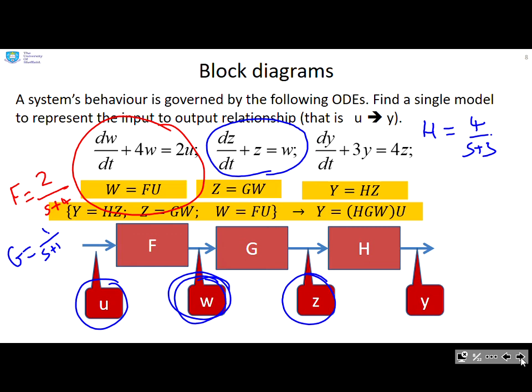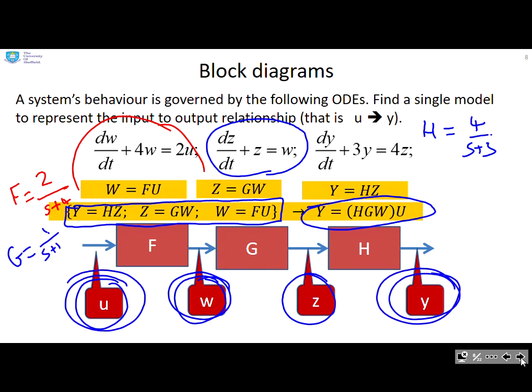Having got all of those relationships, you can see I've grouped them here. If I exploit all of those, I end up with this resulting relationship, that the Laplace transform of the output signal y is linked to the Laplace transform of this signal u on the far left by the expression h times g times f. And that's a lot easier to deal with than the original three ordinary differential equations. So this is one of the reasons that people like block diagrams as a representation.